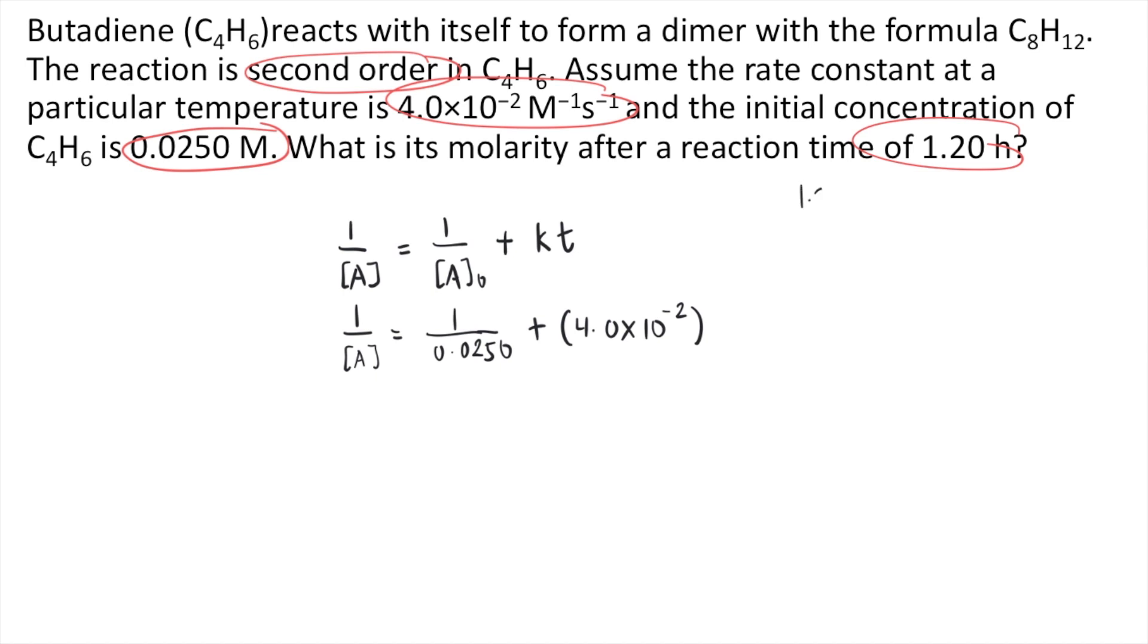So 1.20 hours, we know that for every 1 hour, there are 60 minutes. And for every minute, there are 60 seconds. So 1.20 times 60 times 60, that's equal to 4,320 seconds. So that's the time, 4,320 seconds.